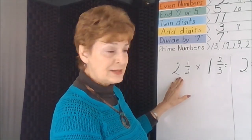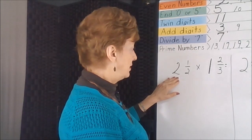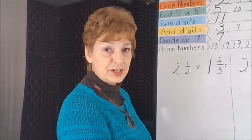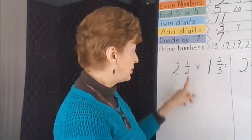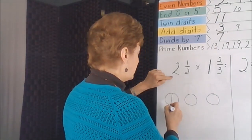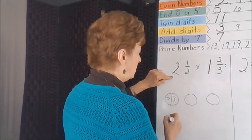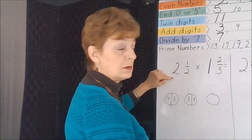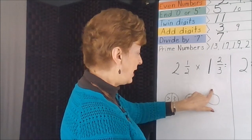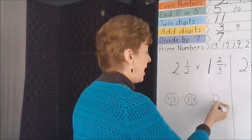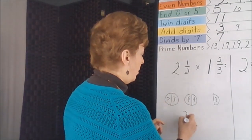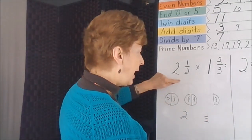In this problem we have two mixed numbers. We're going to need to change our mixed numbers into improper fractions before we can apply the rules for multiplication. Two and a half — we're taking two whole parts and making halves out of them, and then out of the last whole we're just using half of it. That's two whole things and one half of another.